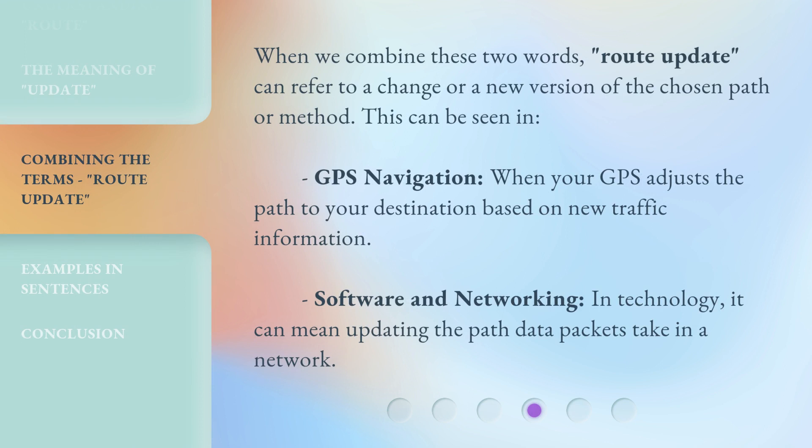When we combine these two words, Root Update can refer to a change or a new version of the chosen path or method. This can be seen in GPS navigation, when your GPS adjusts the path to your destination based on new traffic information, and in software and networking, where it can mean updating the path data packets take in a network.